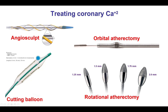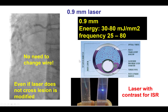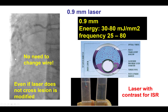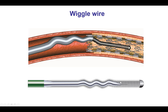Preparation of the vessel is important, especially if there is calcification. There are many ways to prepare lesions, such as atherectomy — either orbital or rotational — as well as the AngioSculpt and cutting balloon. Laser can also be useful, especially in cases of in-stent restenosis, where laser with contrast creates micro-bubbles that modify the plaque around the stent and enable good stent expansion. Another useful but less commonly used tool is the wiggle wire, which has several bends in its shaft proximal to the distal tip that can remove the balloon or stent tip from the wall, facilitating delivery through the lesion.